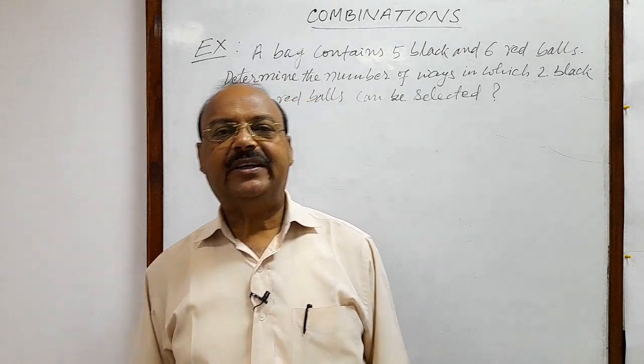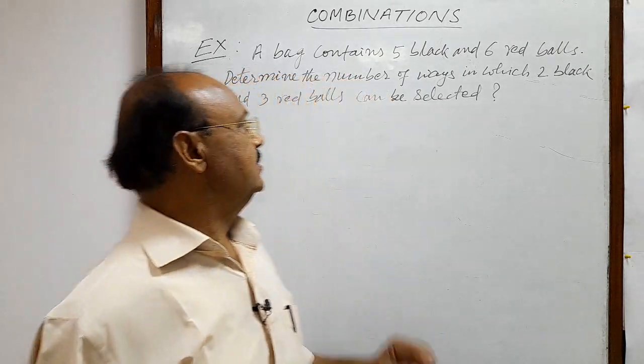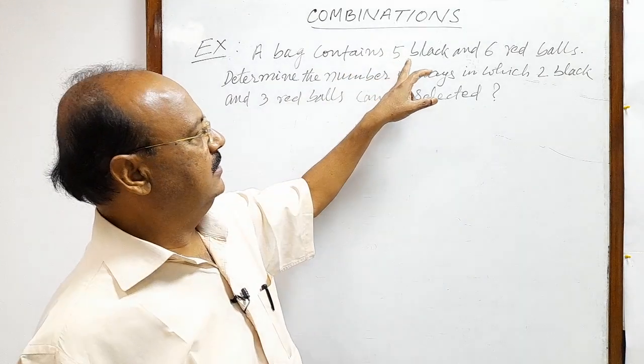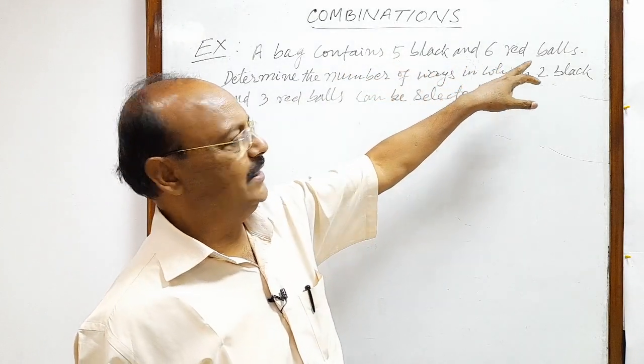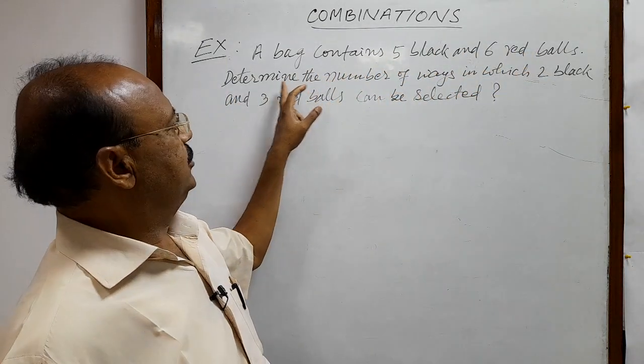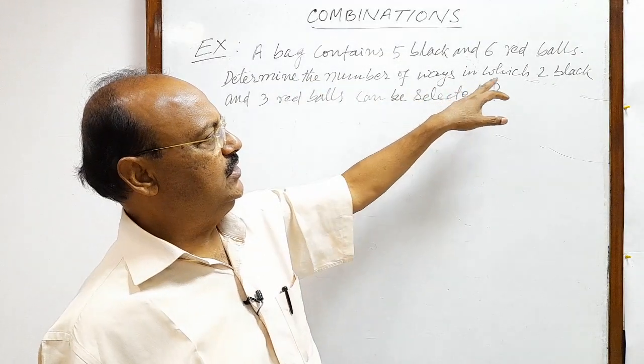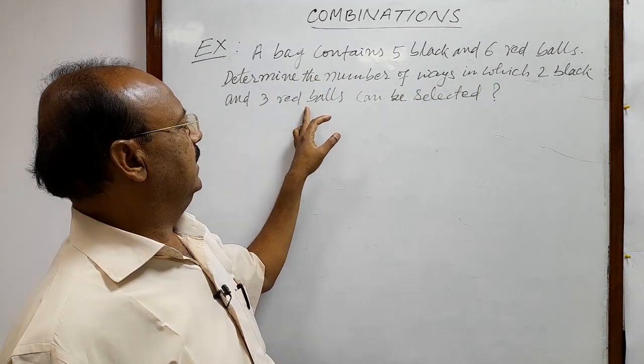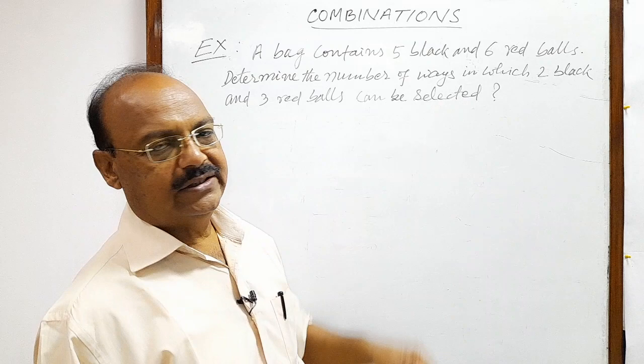Here we will see a question from the topic combinations. The question is: a bag contains five black and six red balls. Determine the number of ways in which two black and three red balls can be selected.